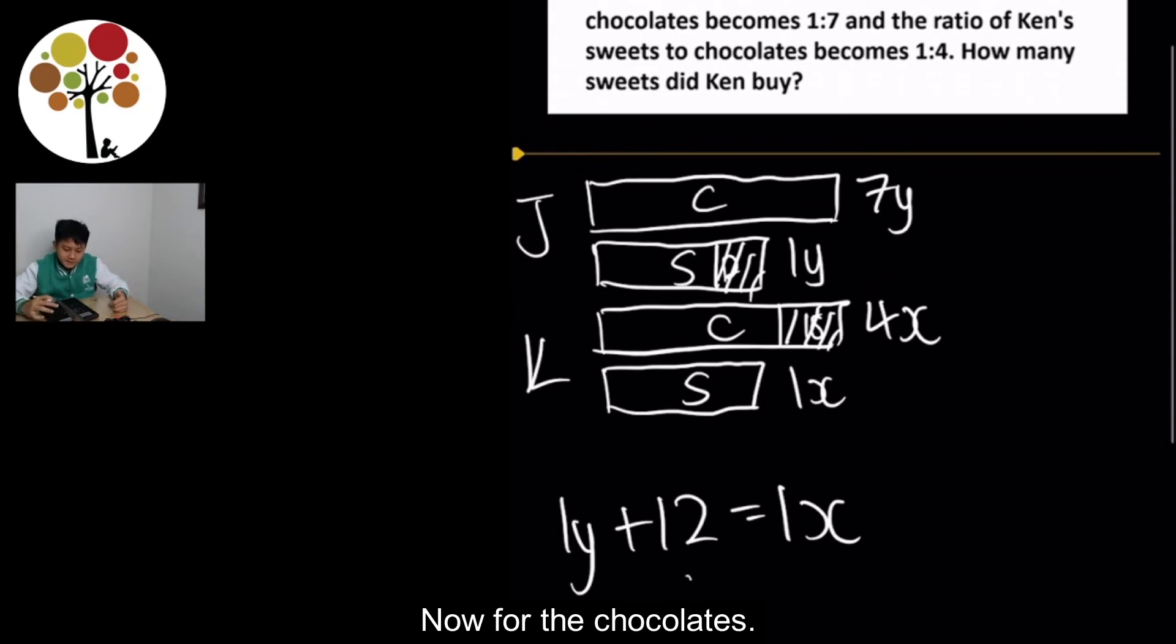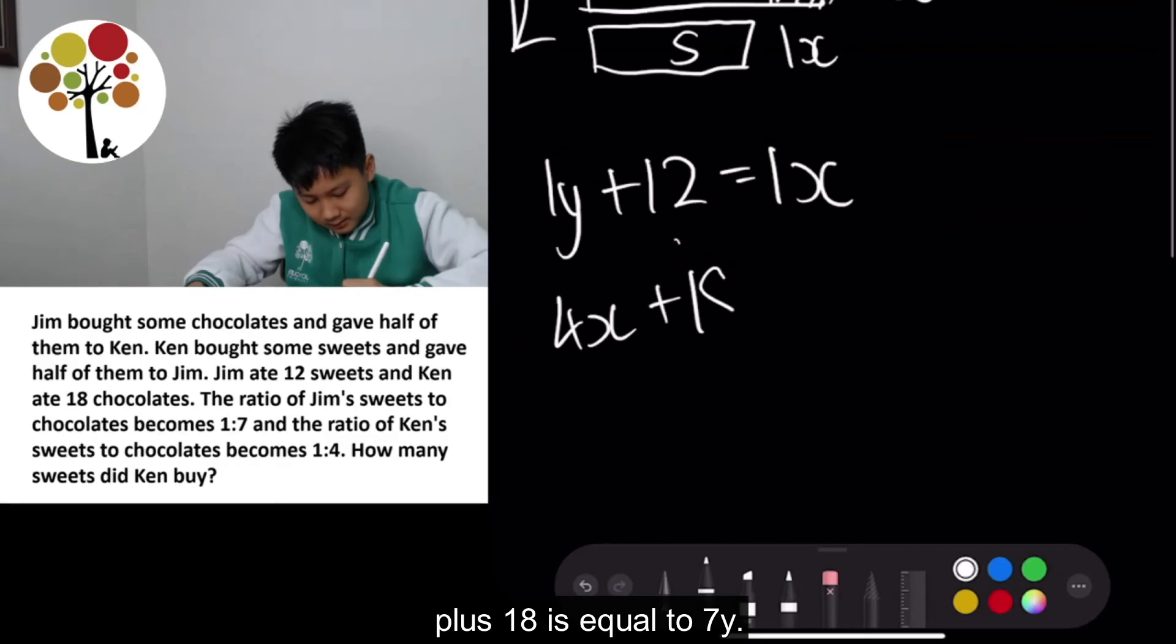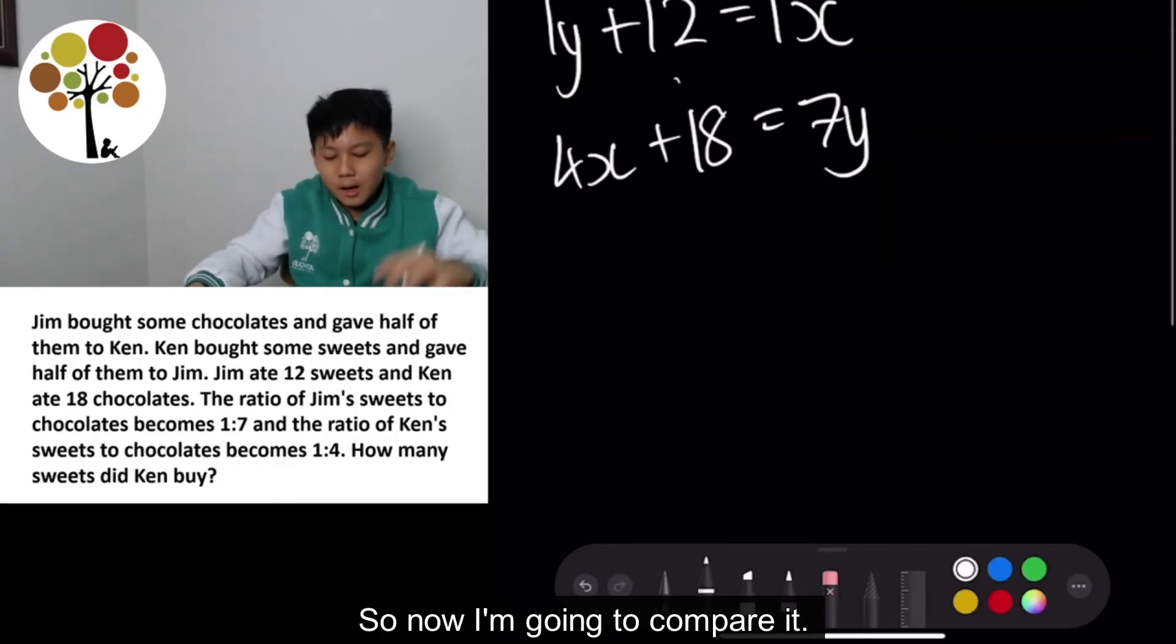Now, for the chocolates. Ken ate 18. So 4X plus 18 is equal to 7Y. 4X plus 18 is equal to 7Y. So now I'm gonna compare it.